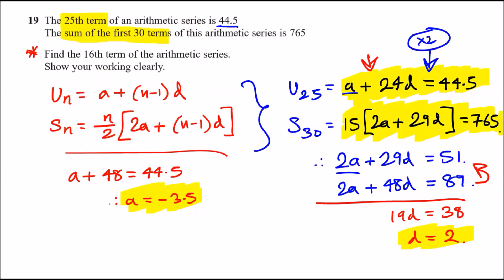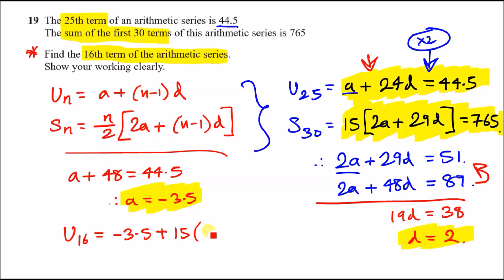The question asks for the 16th term. Using the nth term formula: u₁₆ = a + (n − 1)d = −3.5 + 15 × 2 = −3.5 + 30 = 26.5. That's it — number 19 done.